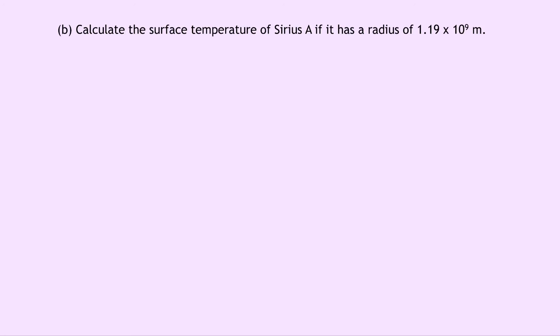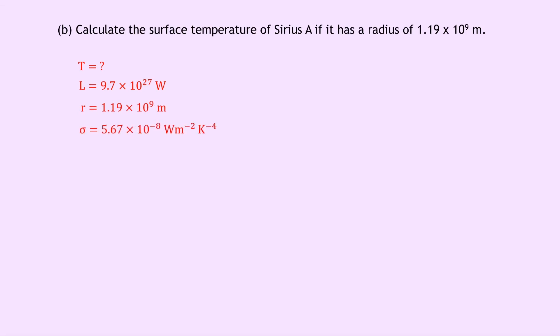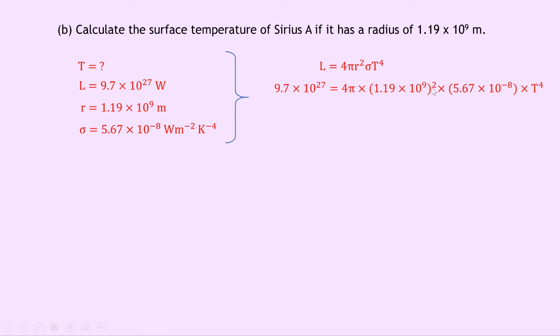Part B asks to calculate the surface temperature of Sirius A if it has a radius of 1.19 times 10 to the 9 meters. We use the luminosity equation since it contains T. L is 9.7 times 10 to the 27 watts, r is 1.19 times 10 to the 9 meters, and sigma is 5.67 times 10 to the minus 8. Writing L equals 4 pi r squared sigma T to the 4 and substituting in, we multiply out the known terms and divide to get T to the 4 equals 9.6 times 10 to the 15. Taking the fourth root — using shift then the root sign on a Casio calculator — gives T equals 9902 Kelvin.